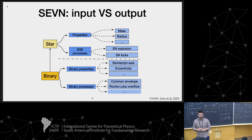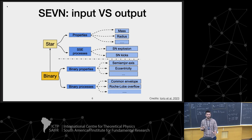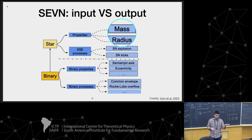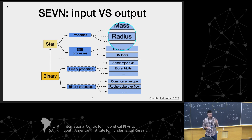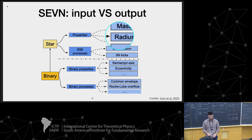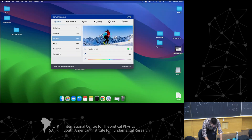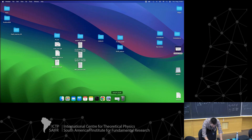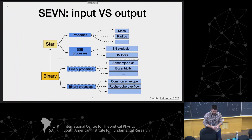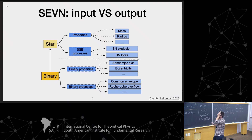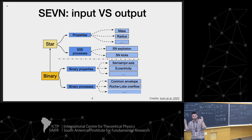A population synthesis code basically combines two engines. One engine follows single stellar evolution — you need to include properties of single stars, for example the mass, the radius, and the metallicity, and define these initial properties. The single stellar evolution engine follows processes like supernova explosions, supernova kicks, and radius evolution — whatever concerns the single stellar evolution.